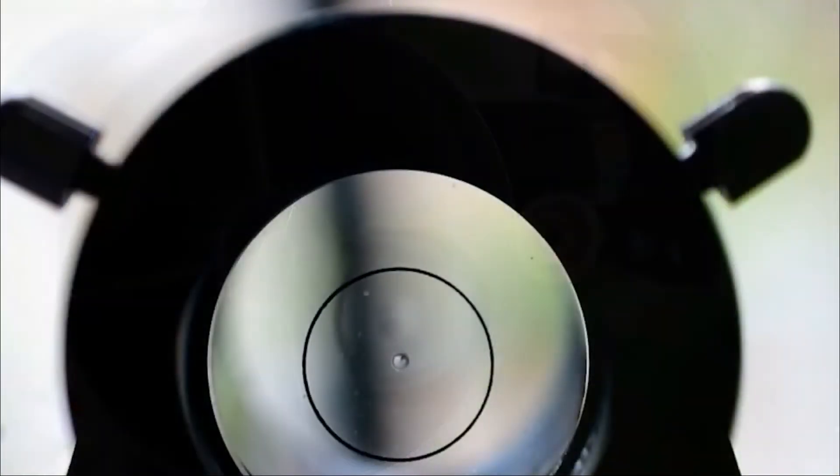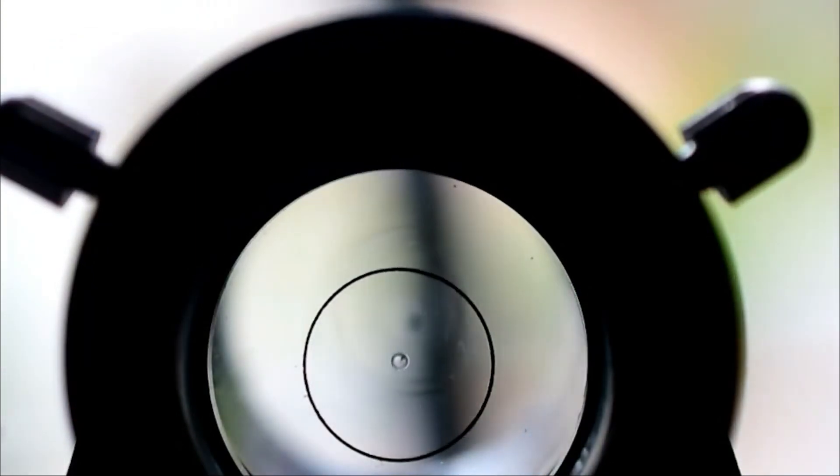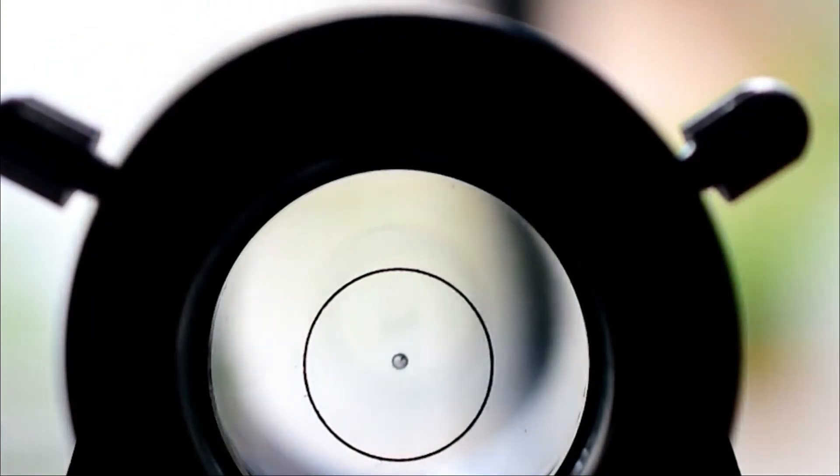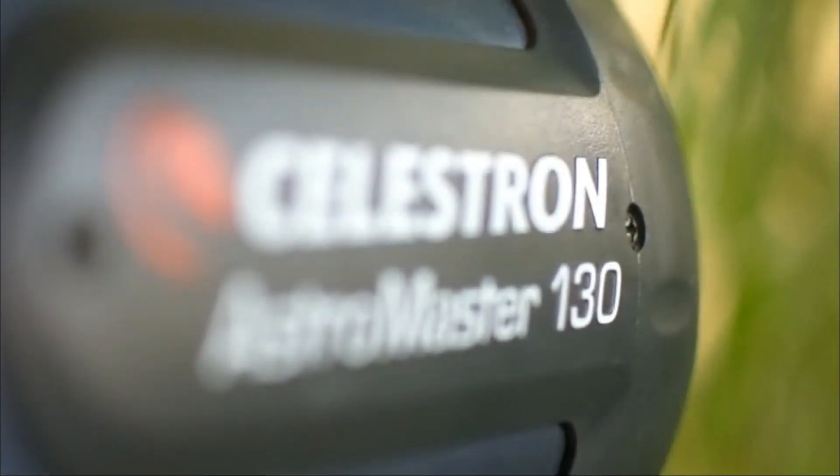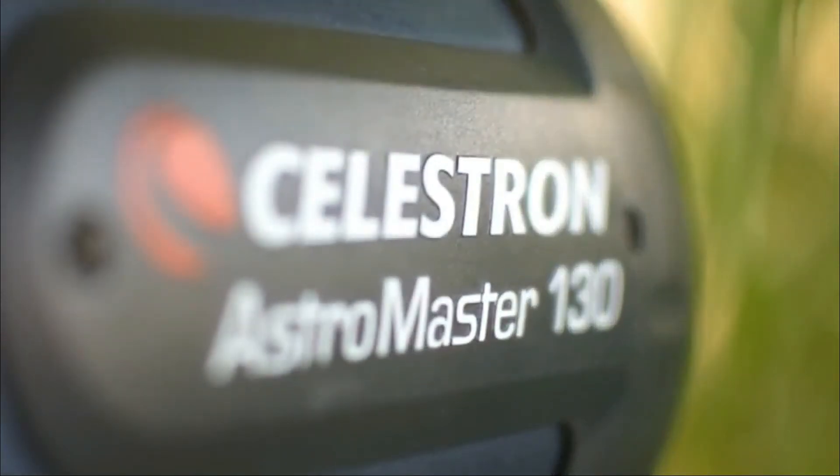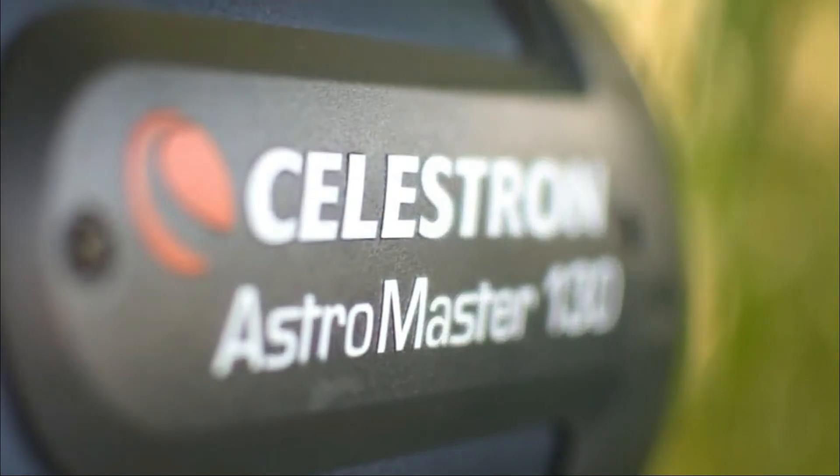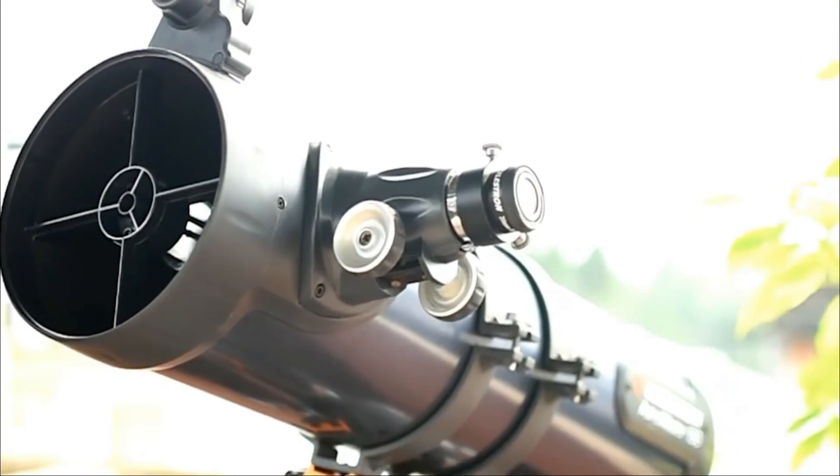This telescope by Astromaster has a manual equatorial mount, so you'll be able to follow celestial objects smoothly just by turning the button. This will make it much easier to keep your target centered in the eyepiece. Ready and easy to take along, the Celestron 31045 is light and compact, so carry it easily in a hiking bag or in a backpack.